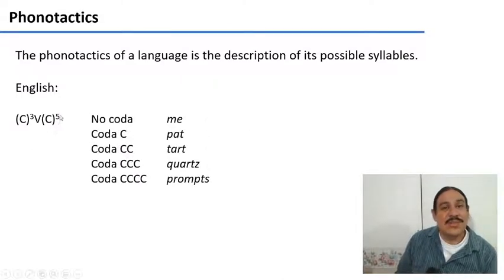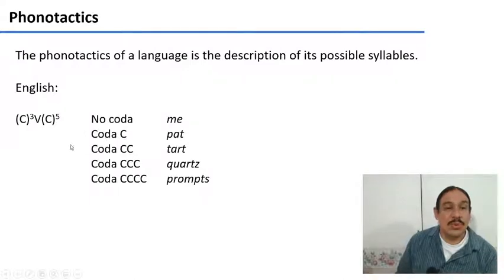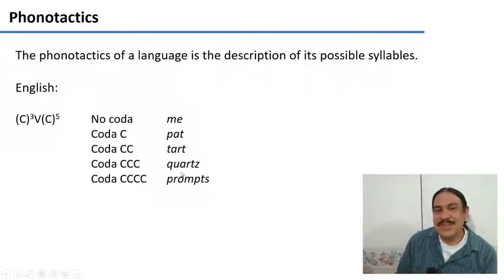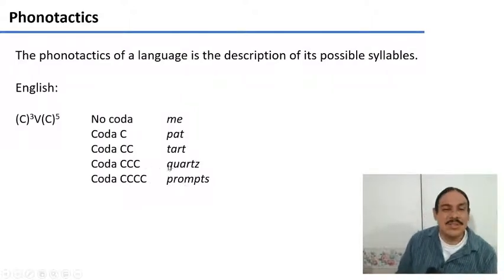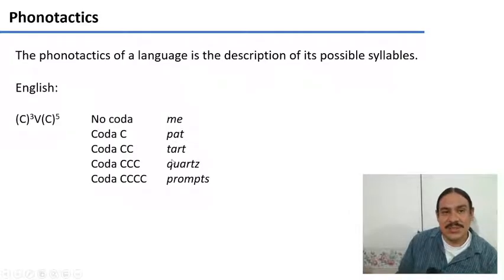On the other side of the equation, we have the codas. These are optional, so you can have syllables with no codas, like 'me' — it just has the onset, the nucleus, and no consonants afterwards. You can have syllables with one, two, three, four, or apparently up to five consonants. For example, four consonants in the coda gives you a word like 'prompts.' Three consonants would be something like 'quarts,' with the r, t, and s. 'Tart' has two consonants, and 'pat' has one consonant in the coda.